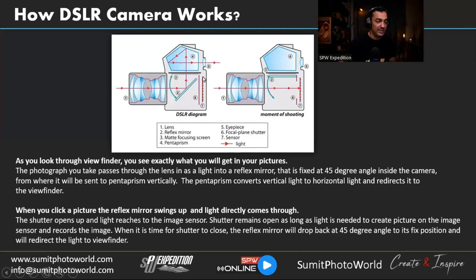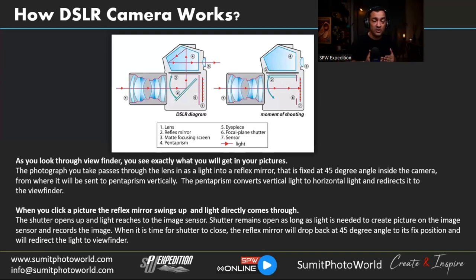The pentaprism converts the vertical line back to horizontal so light can pass through the viewfinder — that's how we see the frame. The blue strip line in the diagram is the shutter plane. When you press the shutter release button, the reflex mirror flips up to 90 degrees, the shutter plane opens, and light reaches the sensor directly. The longer the shutter stays open, the more exposure gets recorded on the sensor.